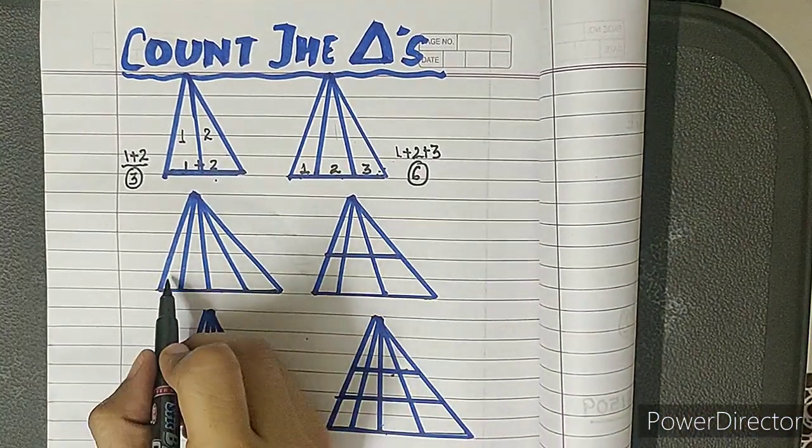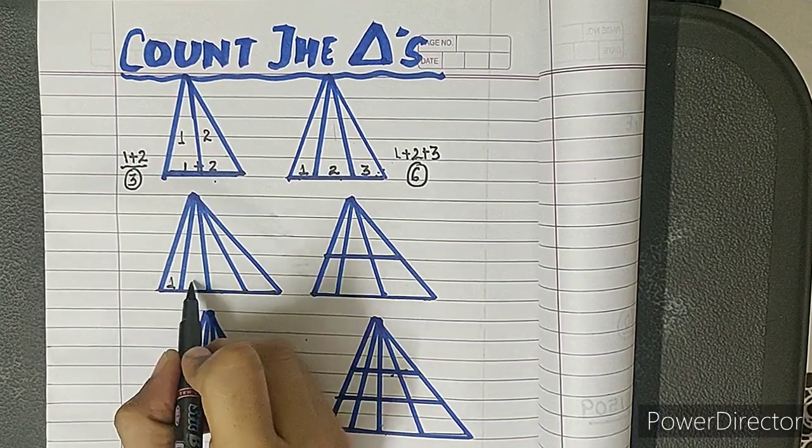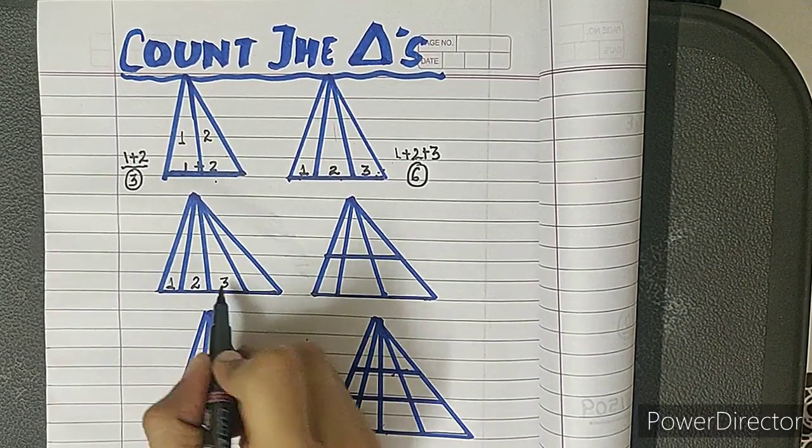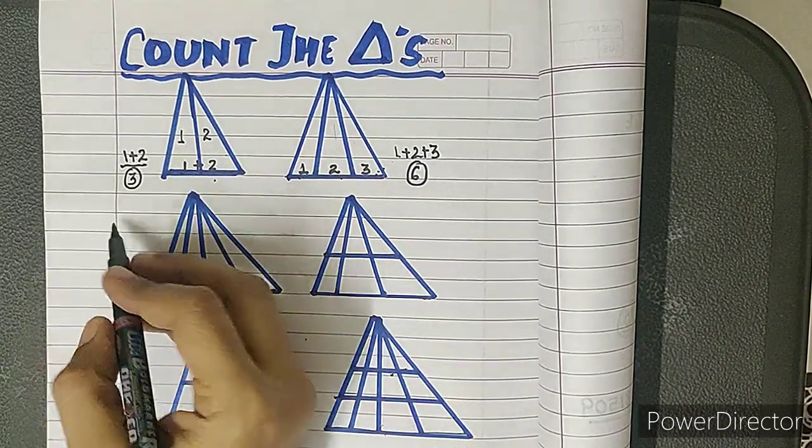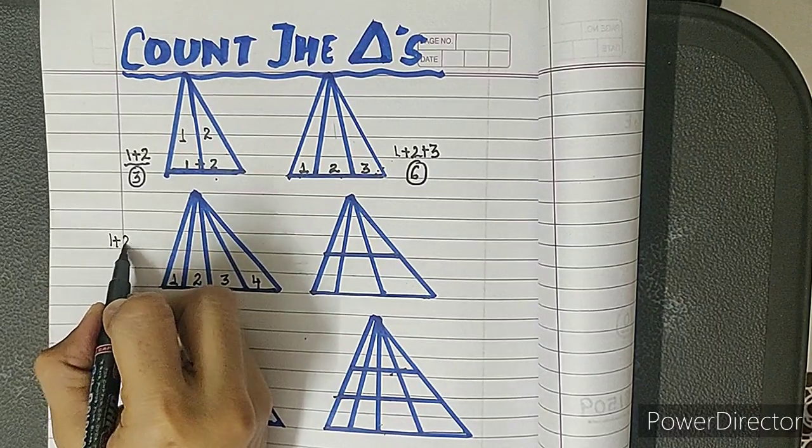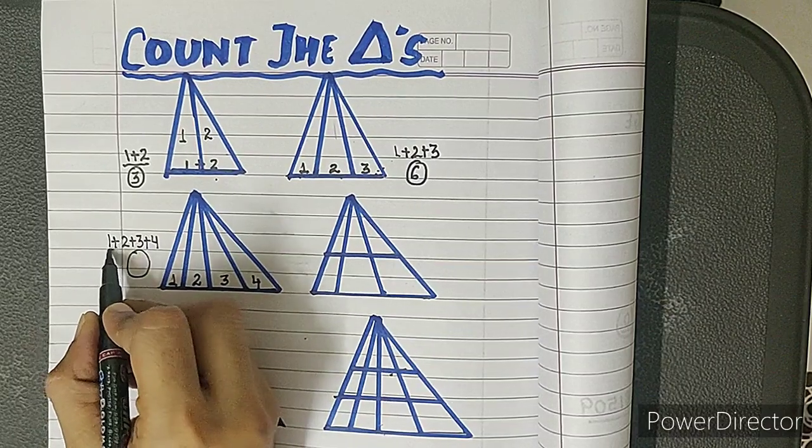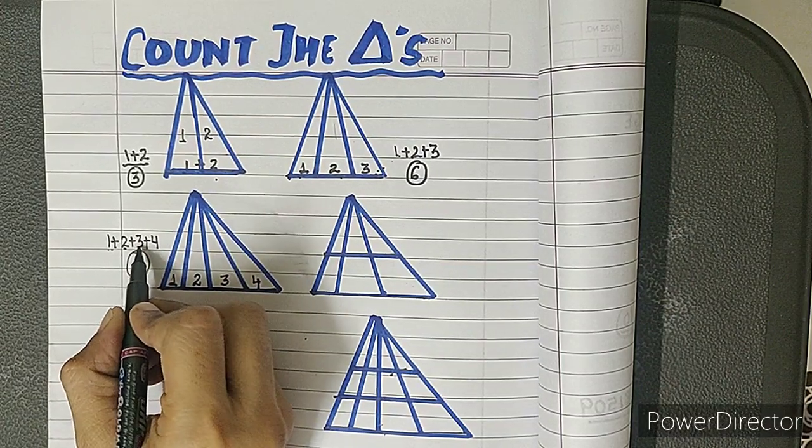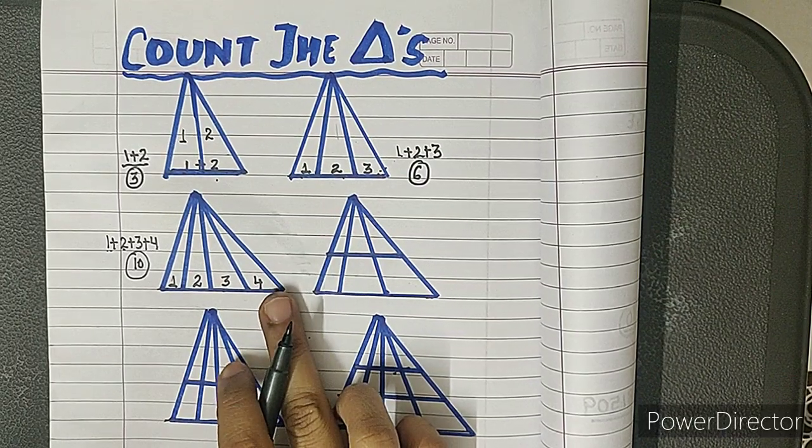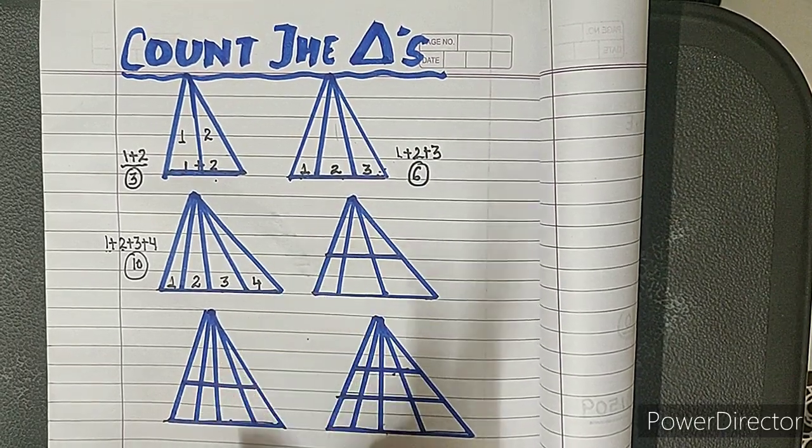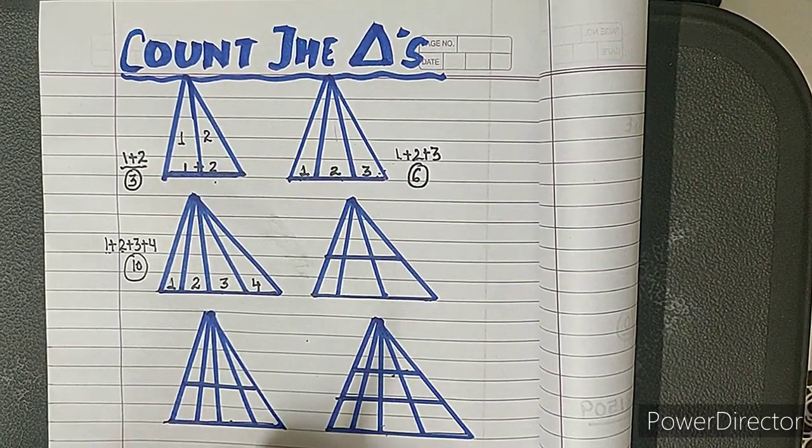Let's move to the next one. Tell me, in how many parts is the base divided? This is one, this is two, this is three, and this is four. So now we have four different bases. I am going to write one plus two plus three plus four. Now I'll add them: one plus two is three, three plus three is six, six plus four is ten. So in this figure we have ten triangles.